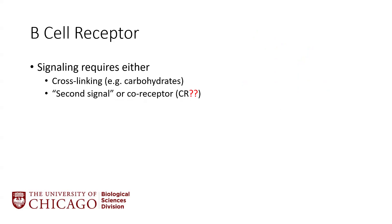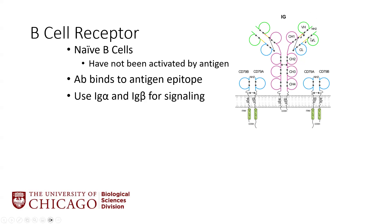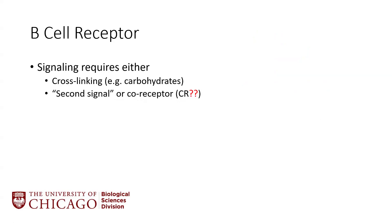B cell signaling requires either cross-linking or a second signal from a co-receptor — you can't just have one little part of that pathogen bind. This is a redundancy built into the immune system so B cells don't start activating out of control. If you have a pathogen with a whole bunch of similar carbohydrates on the outside, each epitope will bind to one B cell receptor, then another, and another — that cross-linking is the double-check system confirming the activation is not a mistake.